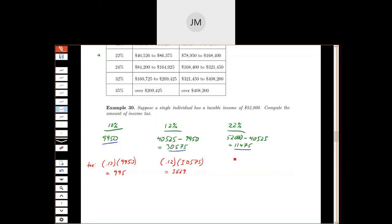And then finally, the 22% bucket, we take 22% of the amount of money that's in there, $11,475. And we get $2,524.50. And for our purposes, we're going to leave the pennies on there.